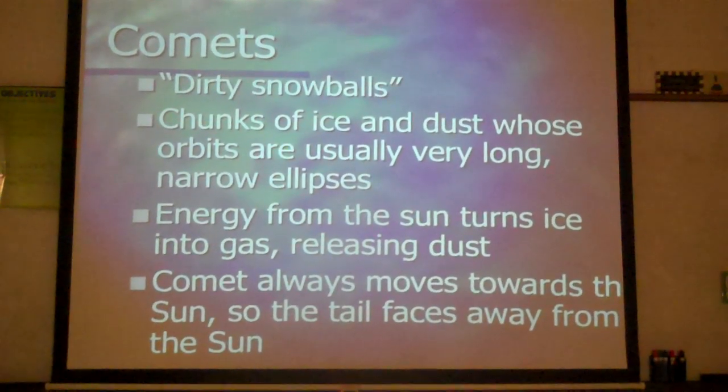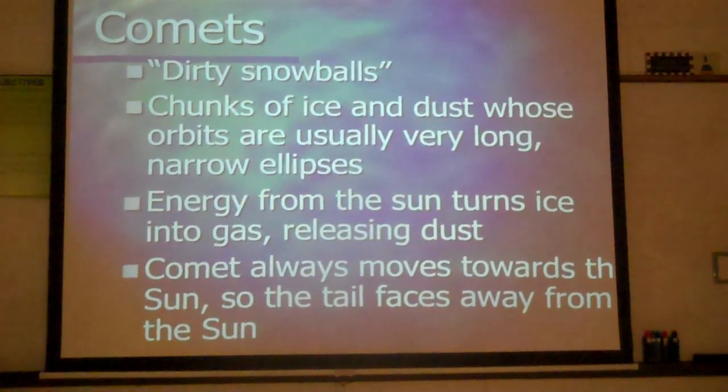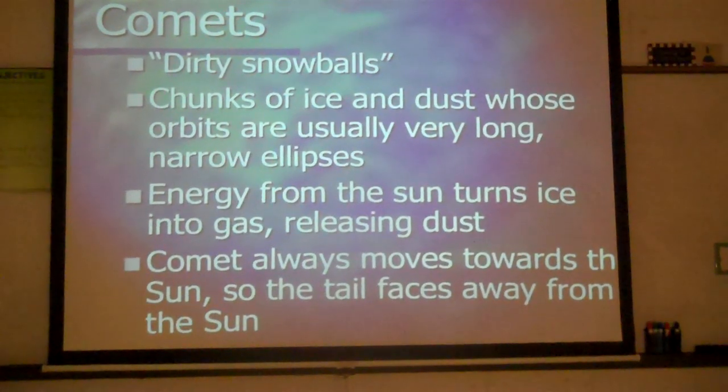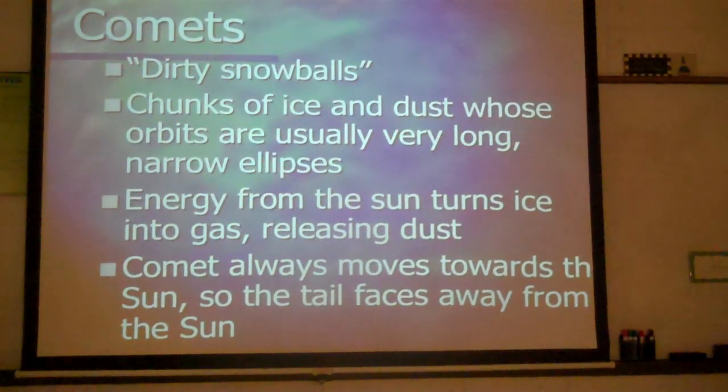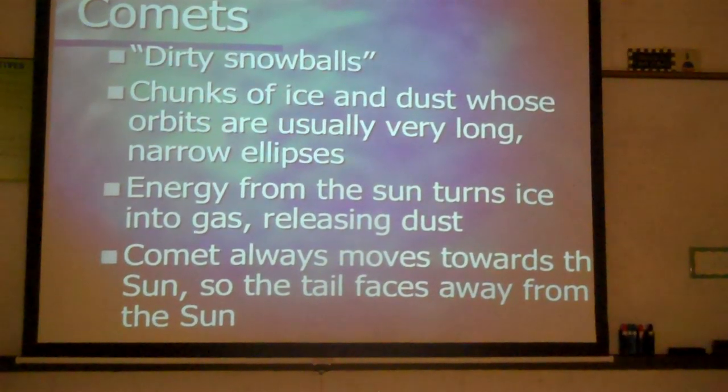The comet always moves towards the sun, so the tail always faces away from the sun. The front part of the comet is always facing the sun as it goes around the sun.